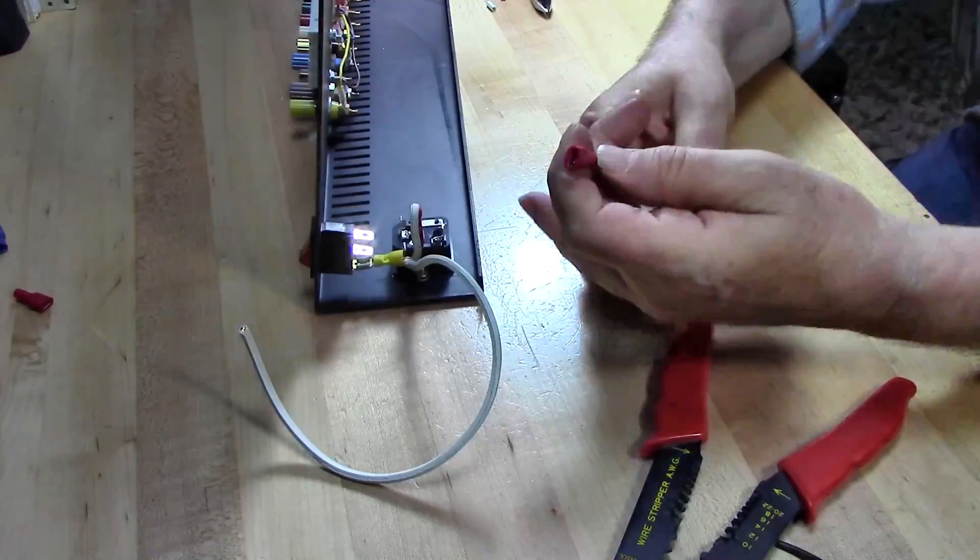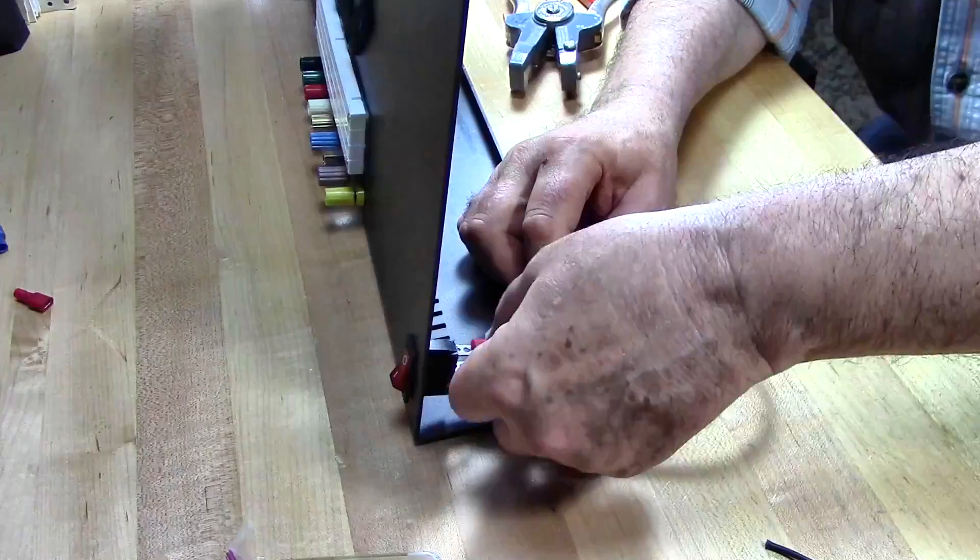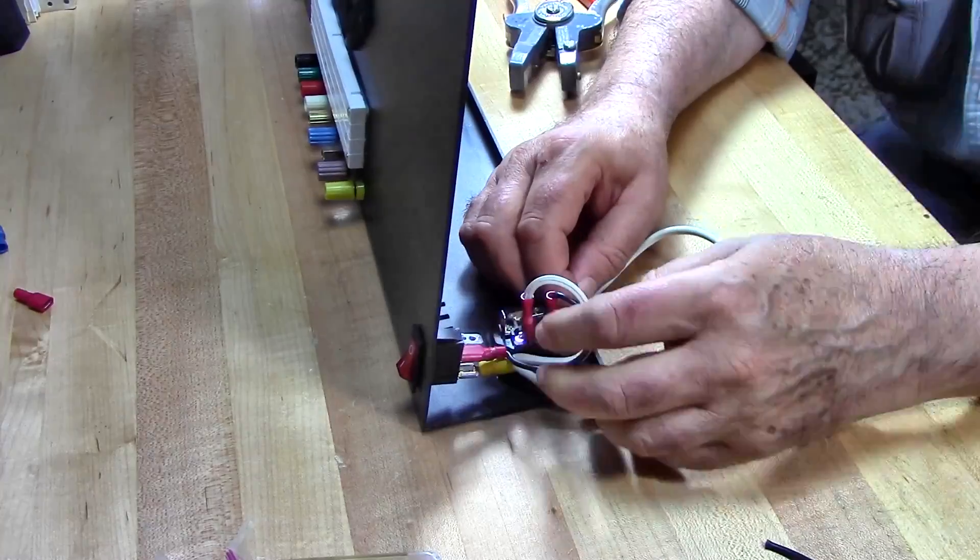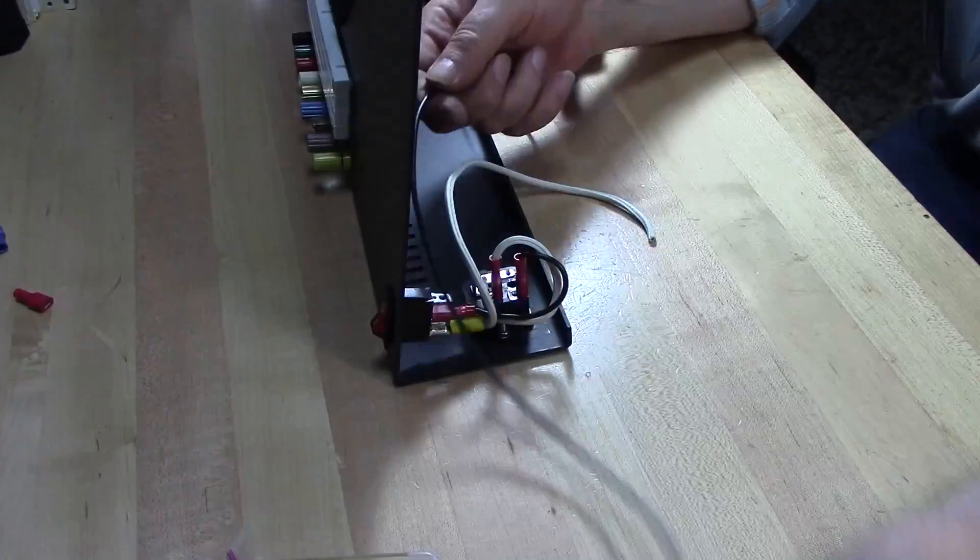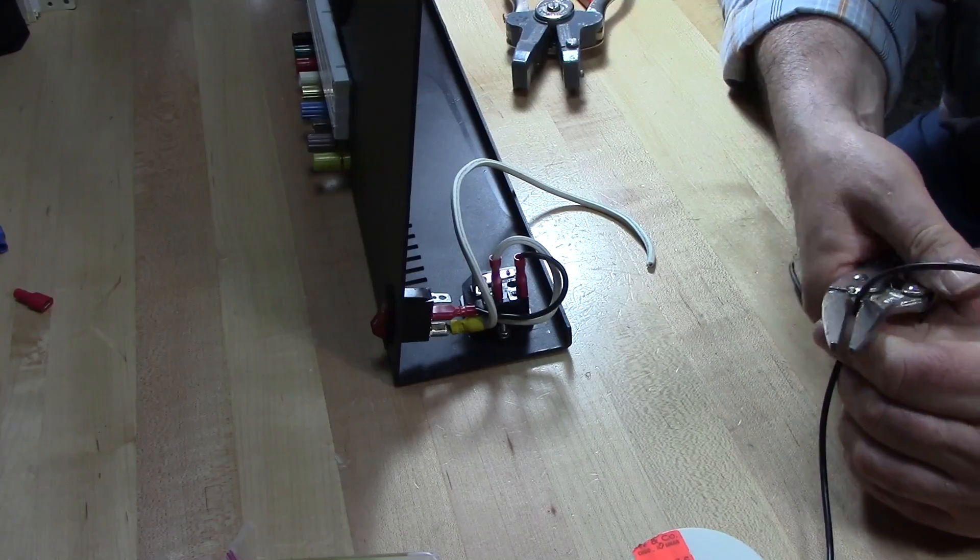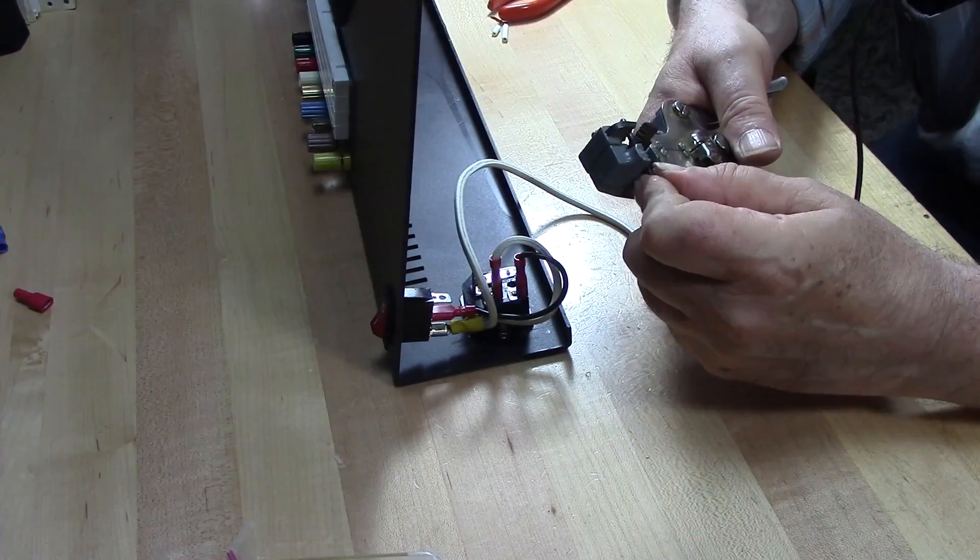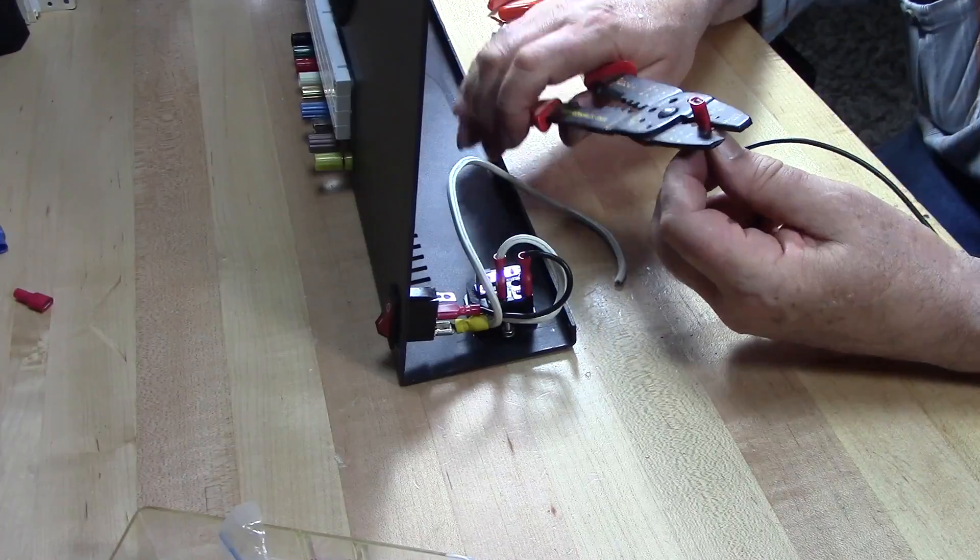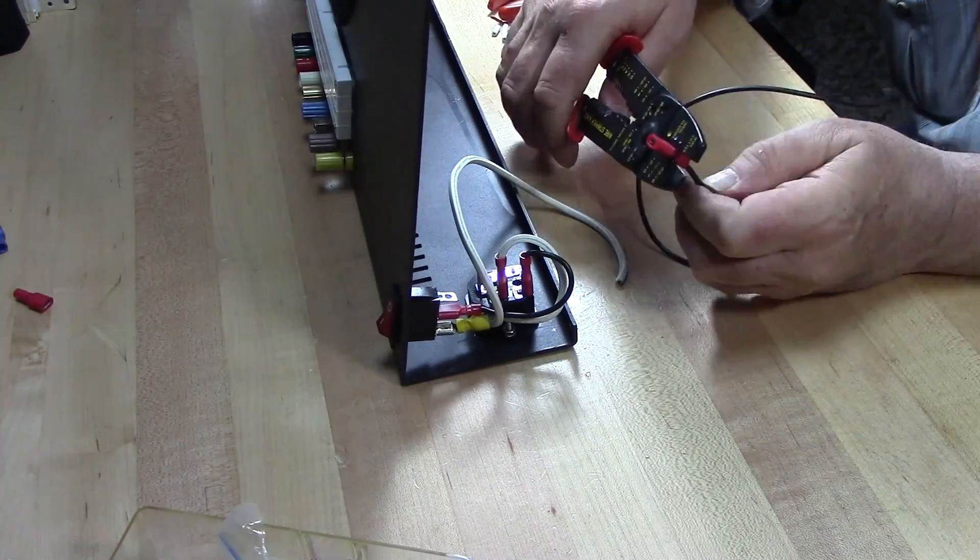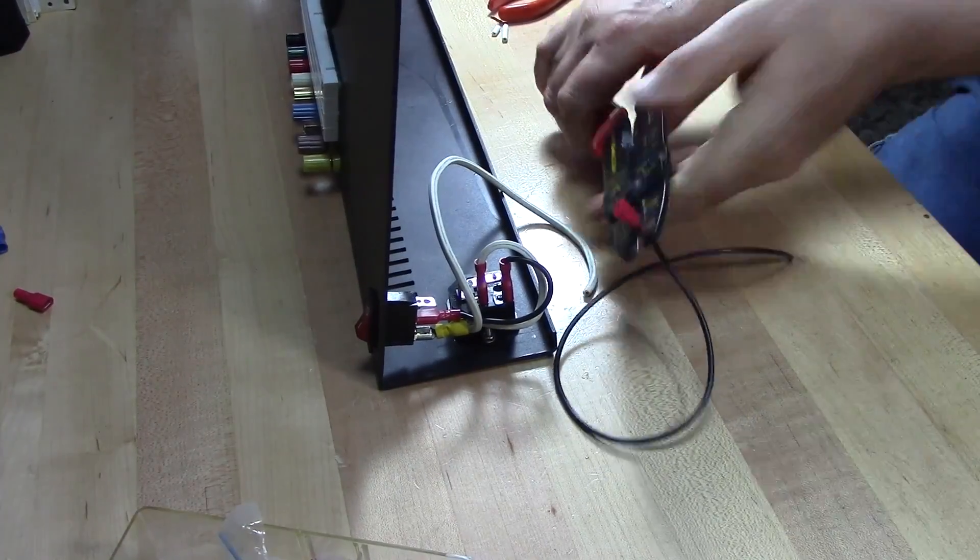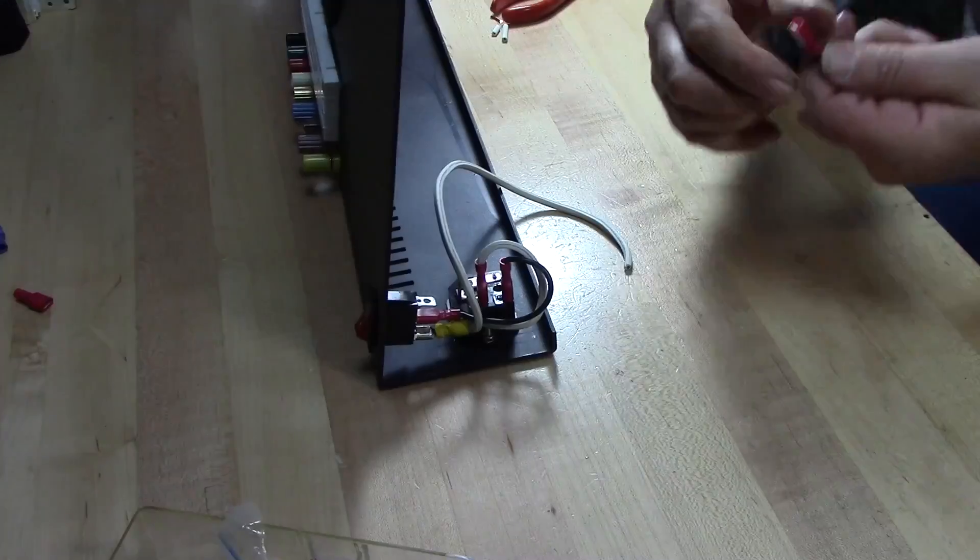So we're running this connection from the AC power input module to the center connector of the power switch. And now we're going to run the second wire coming out of the power switch, and this would go to downstream components.